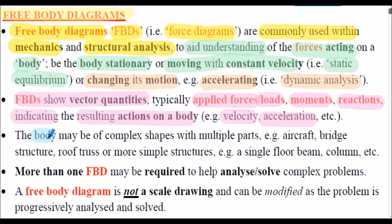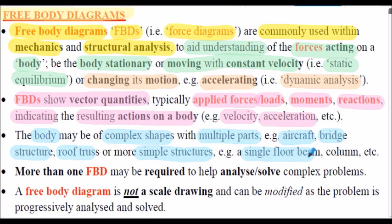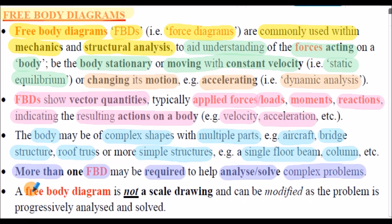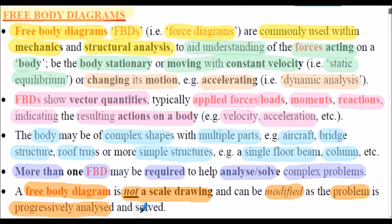The body being analysed may be of complex shapes with multiple parts — for example, an aircraft, a bridge structure, a roof truss — or it can be more simple structures, such as a single floor beam or a single column. Within some analyses, more than one free-body diagram may be required. Note that free-body diagrams are not often drawn to scale, and they can be modified as the problem is progressively analysed and ultimately solved.